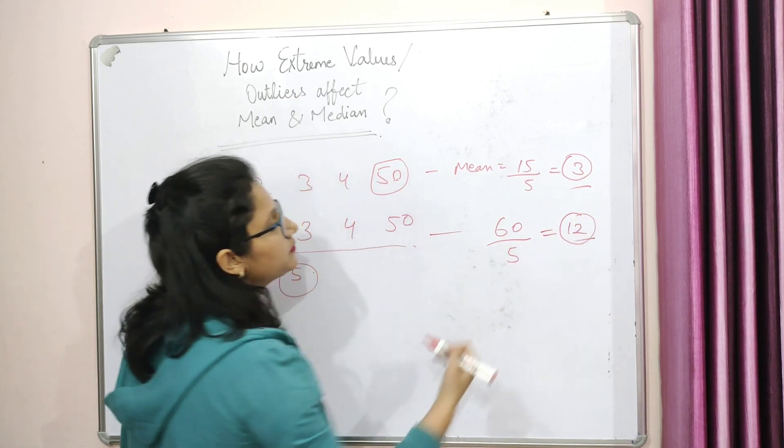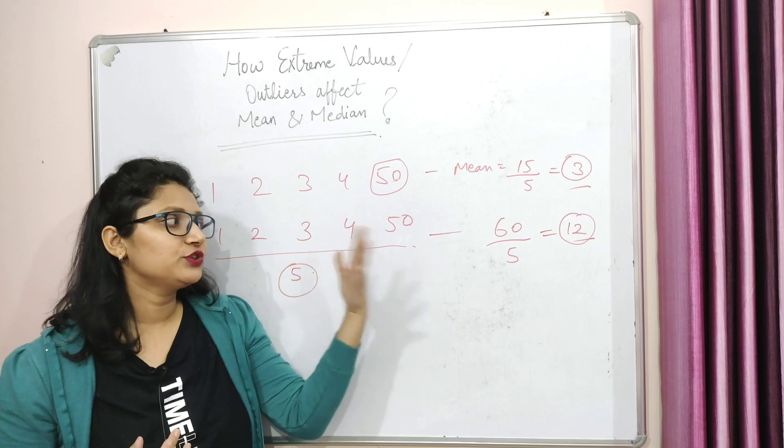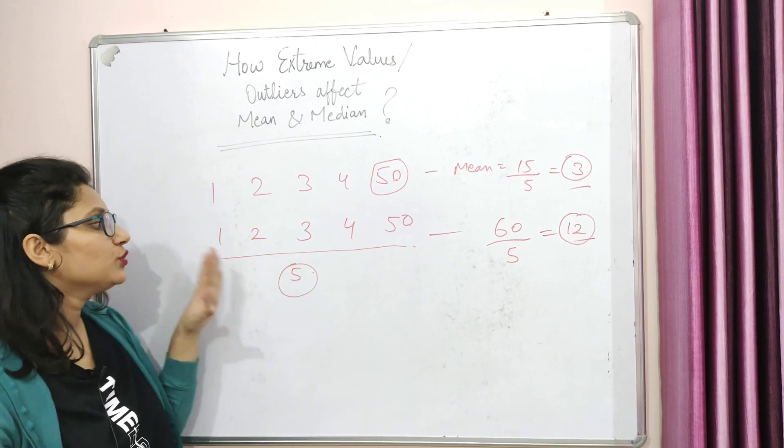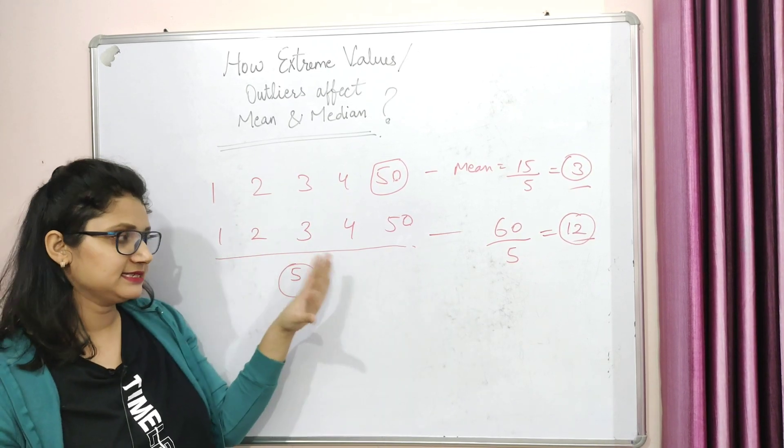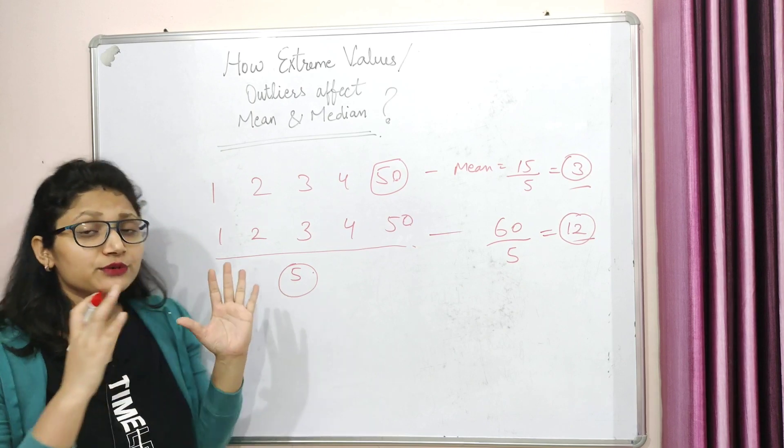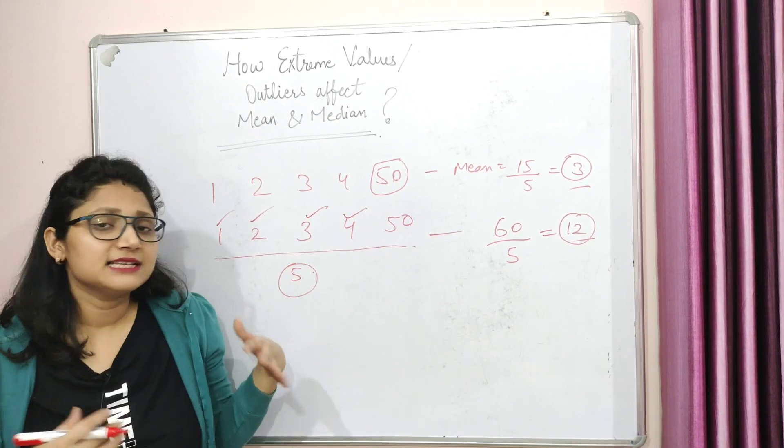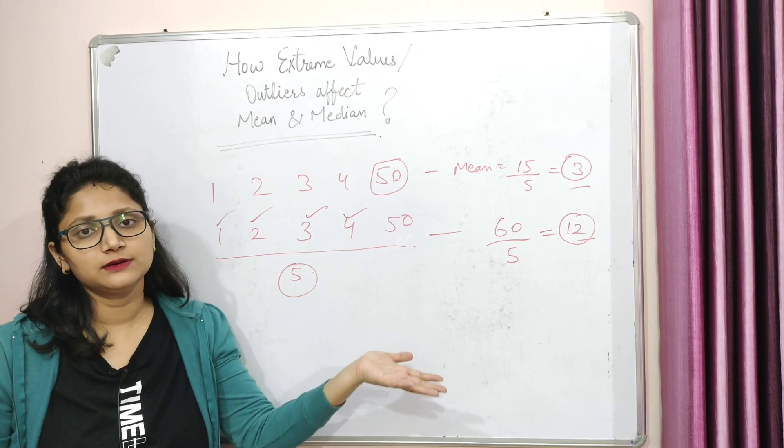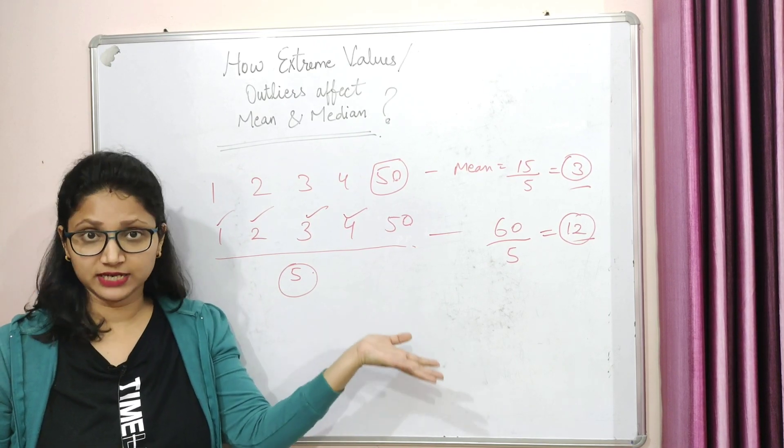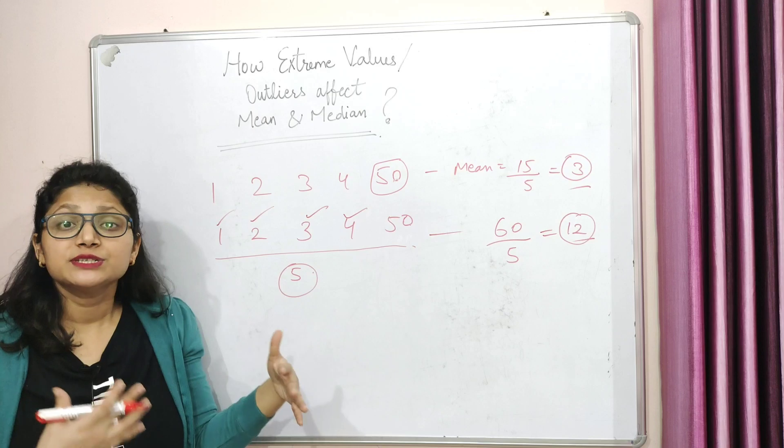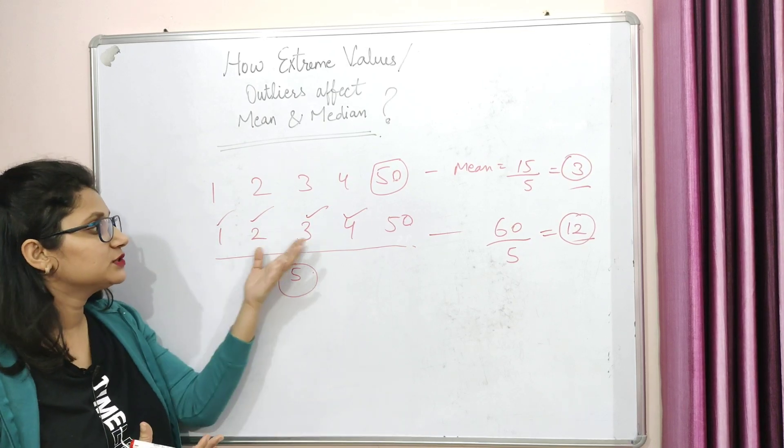Now let's add the extreme values or the outliers to this data set. So what is mean? So what is mean from 3? It's 12. Now if you look at this data set, if you look at these numbers, do you really think all of these values 1, 2, 3, 4, are these values around your central value or your mean? 12, which is 12, no. 12 is a very large number as compared to 1, 2, 3, and 4.